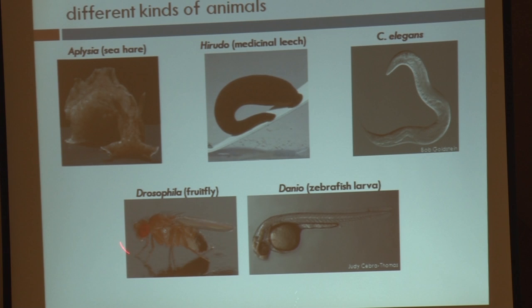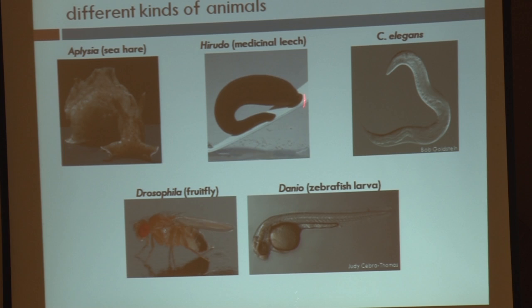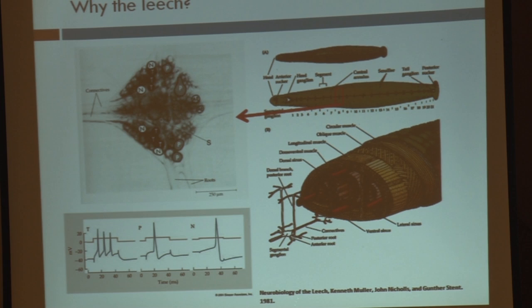For example, the fruit fly or the worm C. elegans are powerful molecular genetics systems for finding out how specific genes work. Animals like the zebrafish are used to understand how the brain grows and develops and what signaling processes are responsible for that. Animals such as Aplysia, which is a mollusk, or Hirudo, the medicinal leech, are useful because they have very accessible nervous systems. It's very easy to do very fine, detailed cellular measurements of individual neurons.